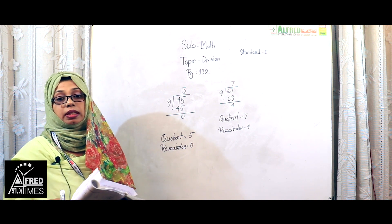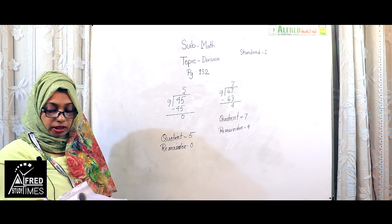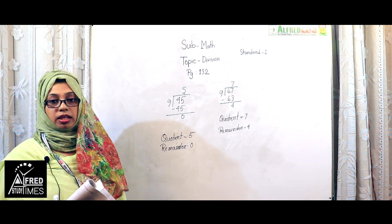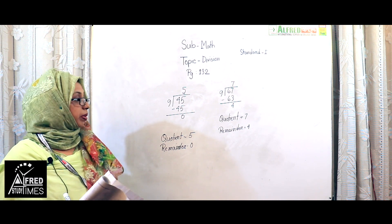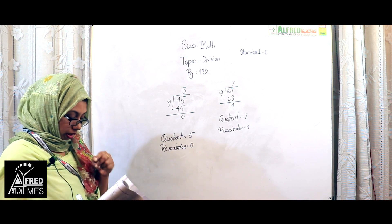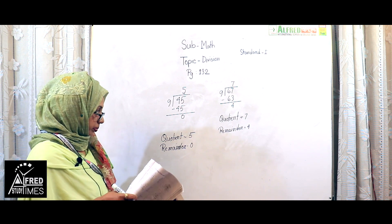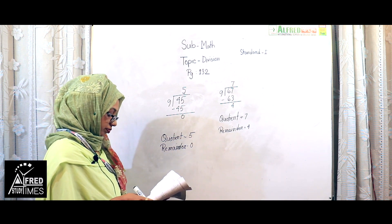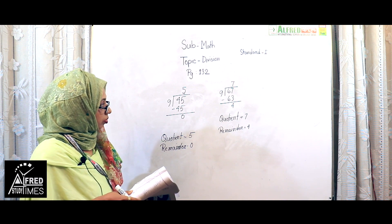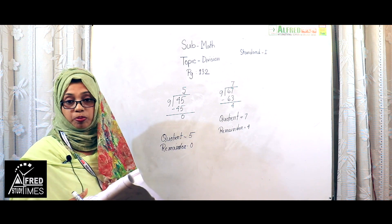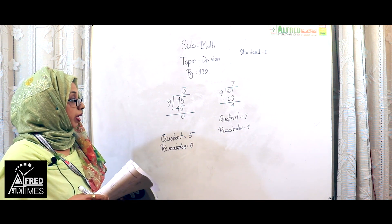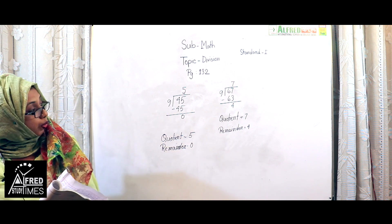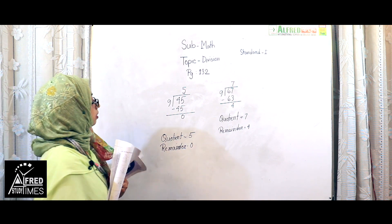Remember: the remainder must always be less than the number you are dividing by. So the quotient is 7 and the remainder is 4. I hope you understand this math. Let's look at another example.